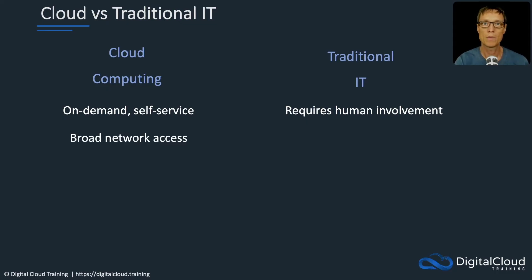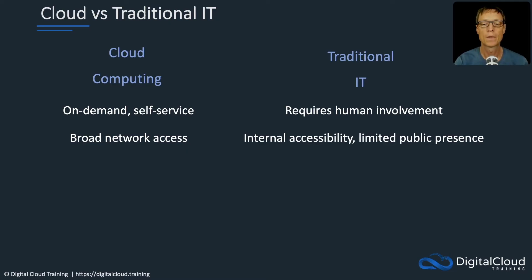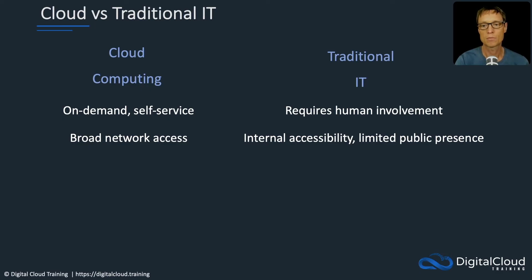Broad network access means you can access your service from any connection, anywhere, at any time. With traditional IT, you can certainly make resources available — companies do publish certain resources on the internet for customers or staff working from home or on the road — but there's typically internal accessibility primarily, and a limited public presence, making it a bit more difficult to publish services on the internet. Conversely, with cloud computing you have APIs, which we'll talk about later in the course, which means you can access pretty much any service over the internet.